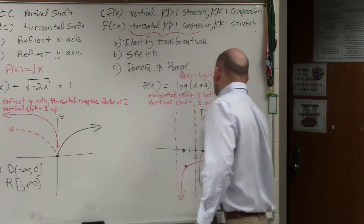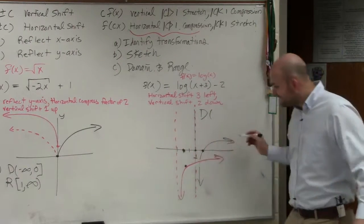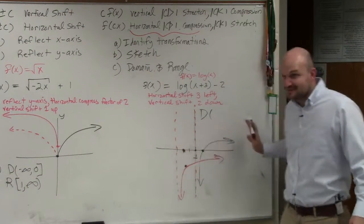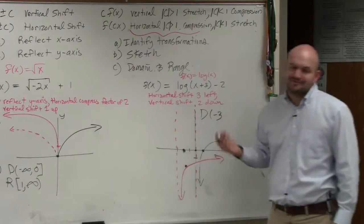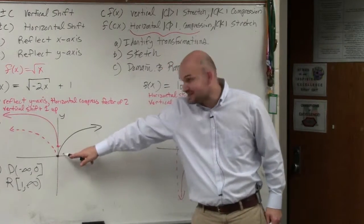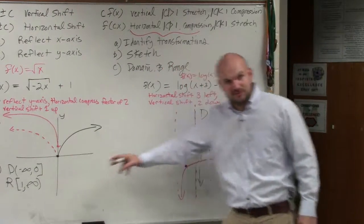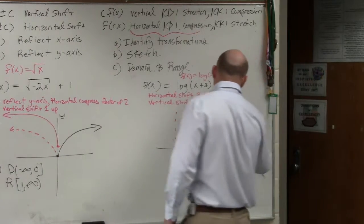The domain. How far to the left is my graph going? Negative 3. Is that included or not included? Not included. I put parentheses. But do you guys see how this one was included? Because there's a point there. There's no point there. It's an asymptote, so it's not included. And then it goes to infinity to the right.